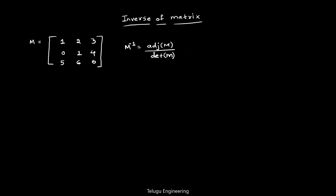First, find the determinant of this matrix. det(M) equals — take the element 1 and find the determinant of the minor matrix corresponding to it. Close this column and this row, and the four remaining elements form the 2x2 minor matrix, which gives 1 into (1·0 − 6·4).